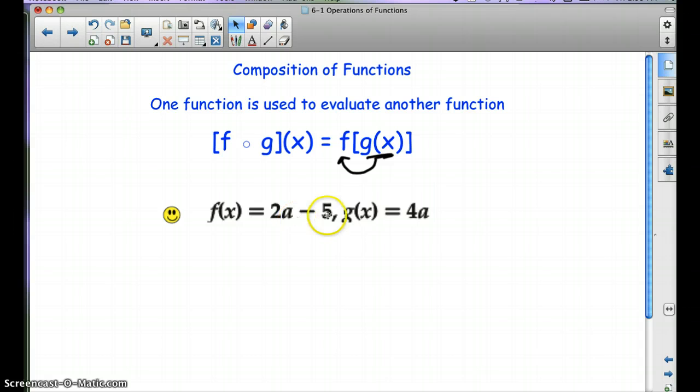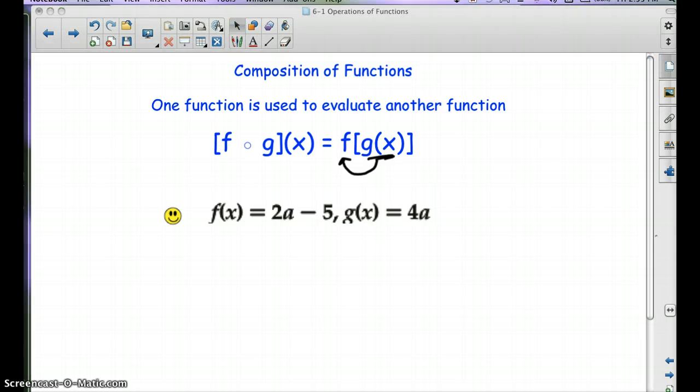So let me show you what that looks like. Let's say we have f of x equals 2a minus 5 and g of x equals 4a. And I don't really like this because it's f of x and it has a here. So why don't we go ahead and just change these to x's.